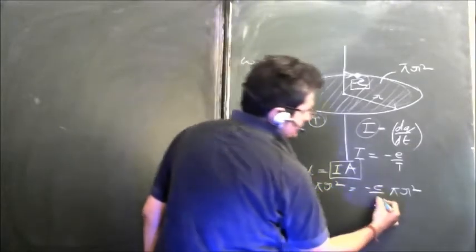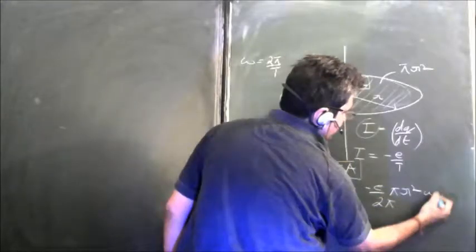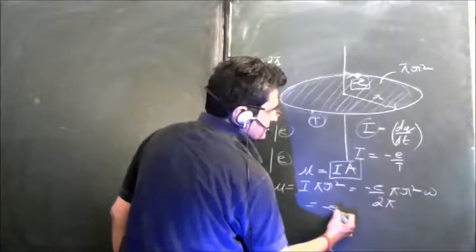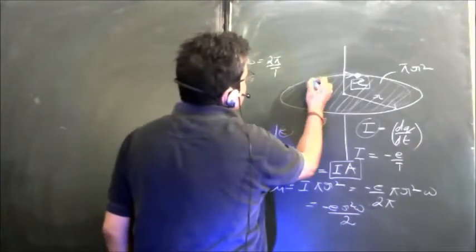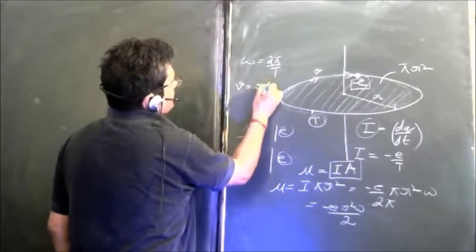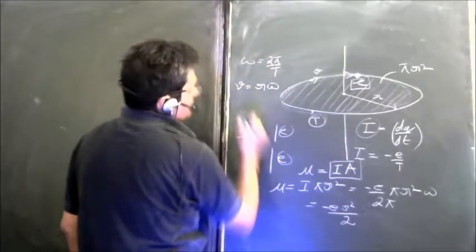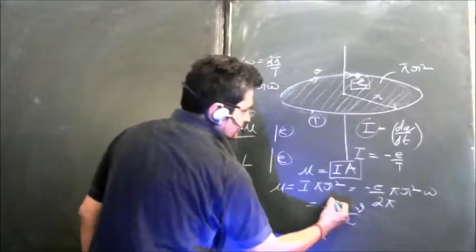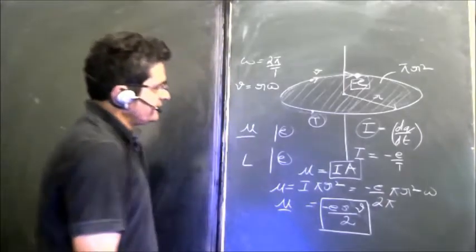Now ω equals 2π upon T, so we replace T by 2π upon ω, giving minus e·r²·ω upon 2. Since velocity and angular velocity are related by v = Rω, we replace ω by v/R. R cancels, and we get the magnetic dipole moment as minus e·v·r upon 2.